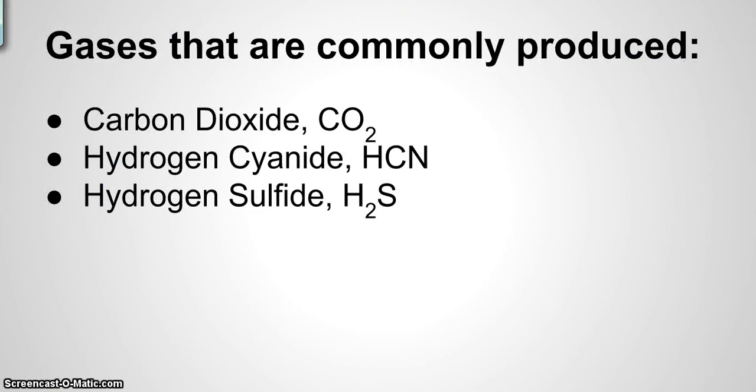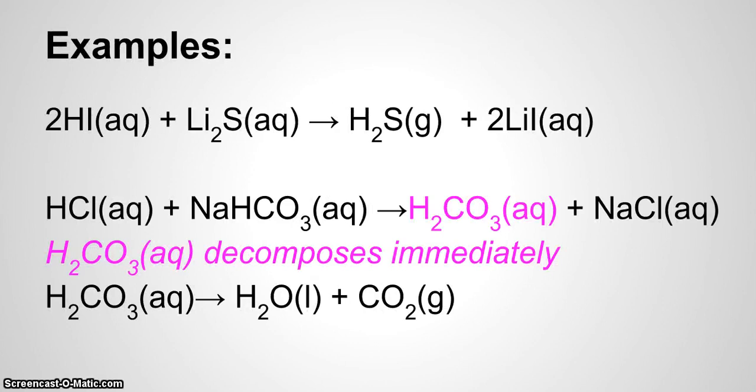We will be doing more of those examples in class, but let's finish up this video with gases that are commonly produced. Generally, in these double replacement reactions, you can see carbon dioxide, which is CO₂. You can see hydrogen cyanide, HCN, and you can see hydrogen sulfide, which is H₂S.